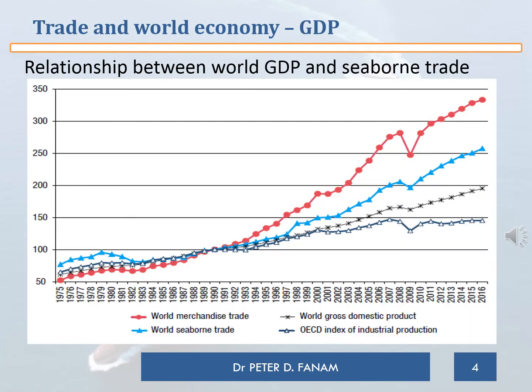Let's look at the relationship between GDP and seaborne trade. In this graph, I want to focus on the two middle lines — the GDP line (black) and the seaborne trade line (blue). Any small increase or decrease in GDP will cause more than a triple increase or decrease in seaborne trade. Can you tell me why there is such a magnified effect on seaborne trade whenever there is any change in GDP?